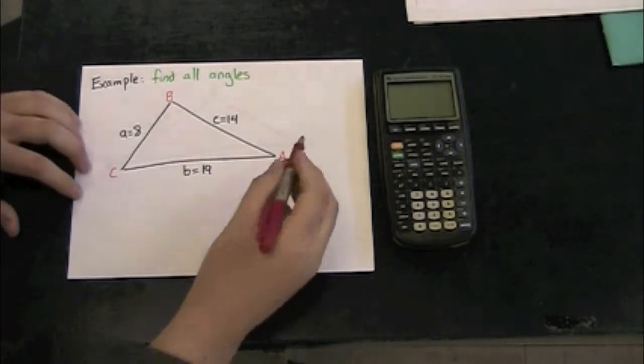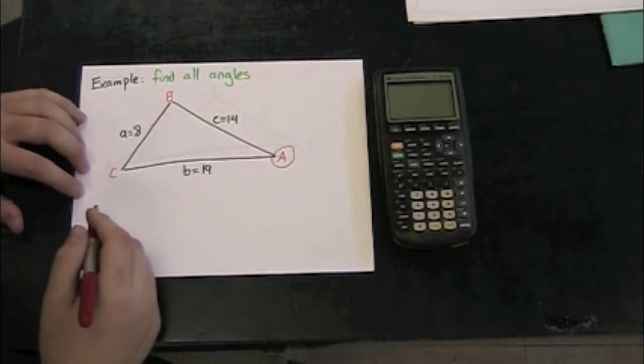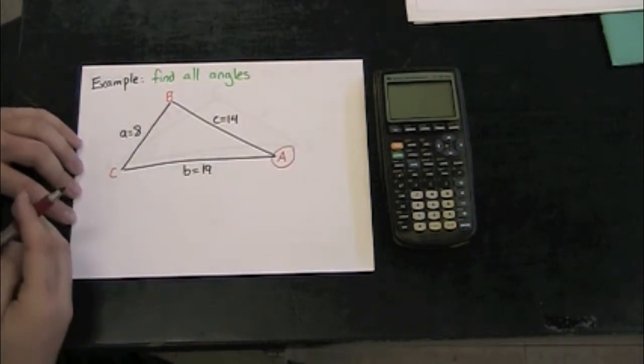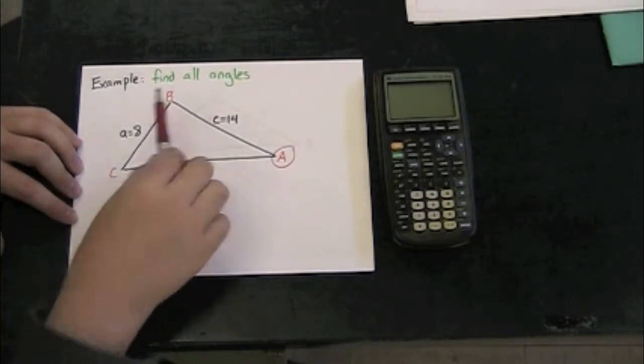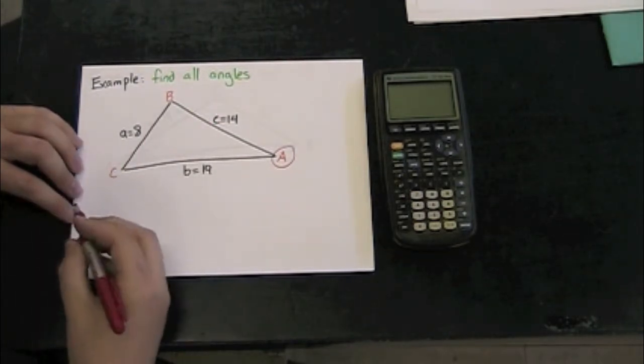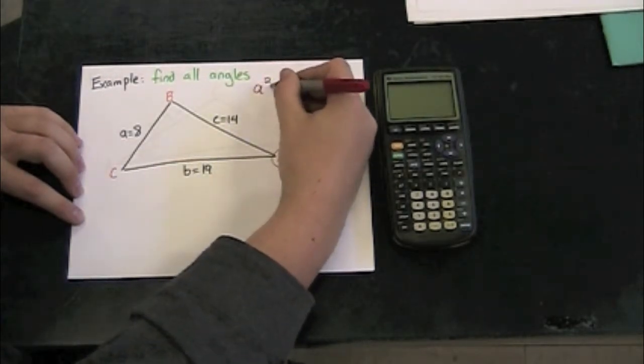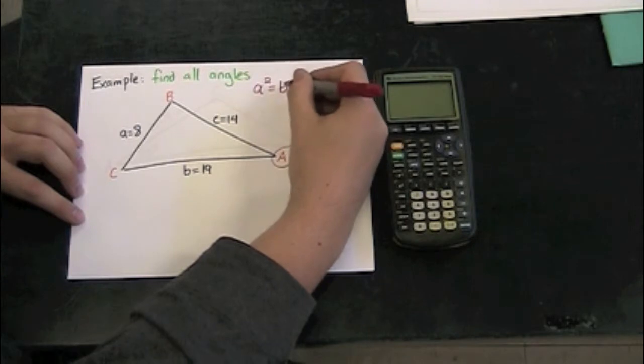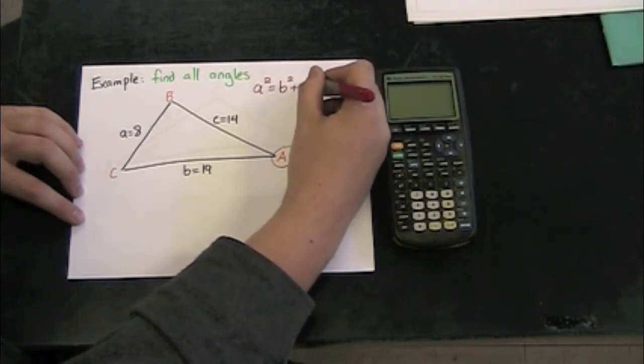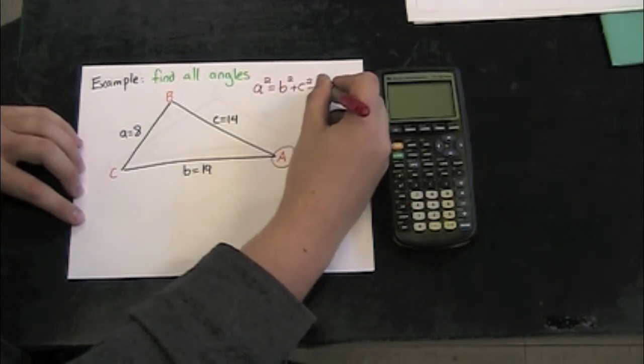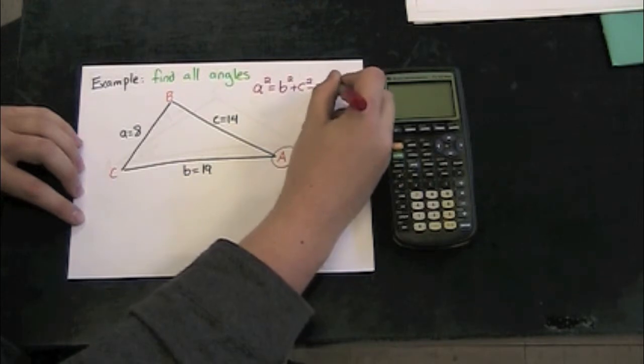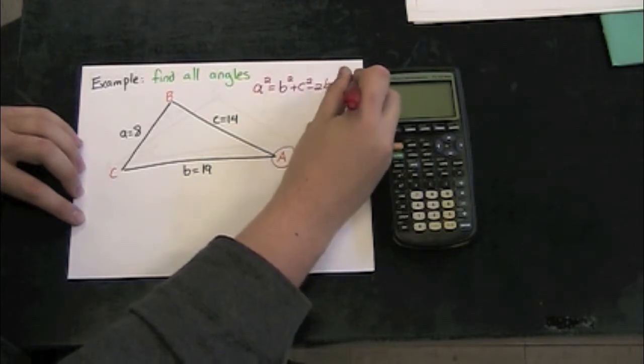Let's start by looking for angle A. I'm going to use the form a² = b² + c² - 2bc cosine of angle A.